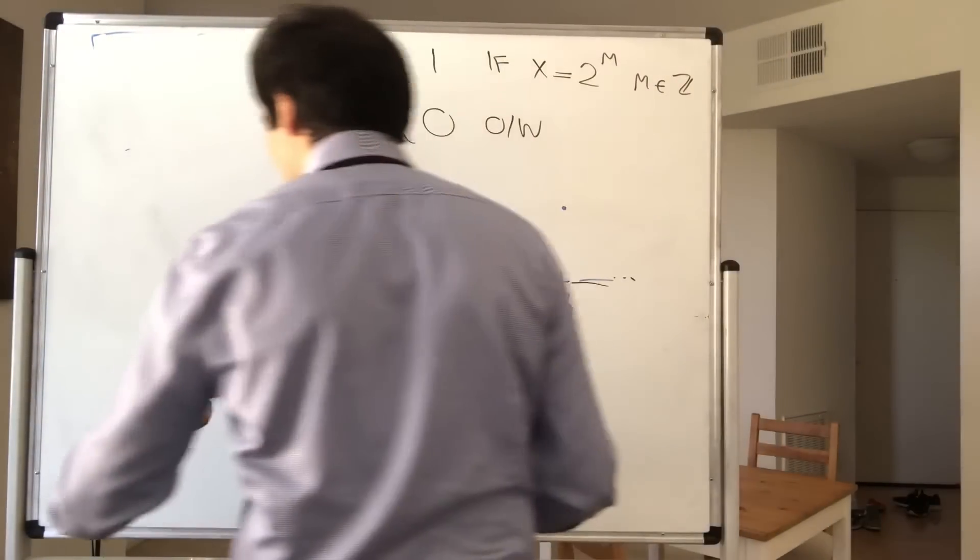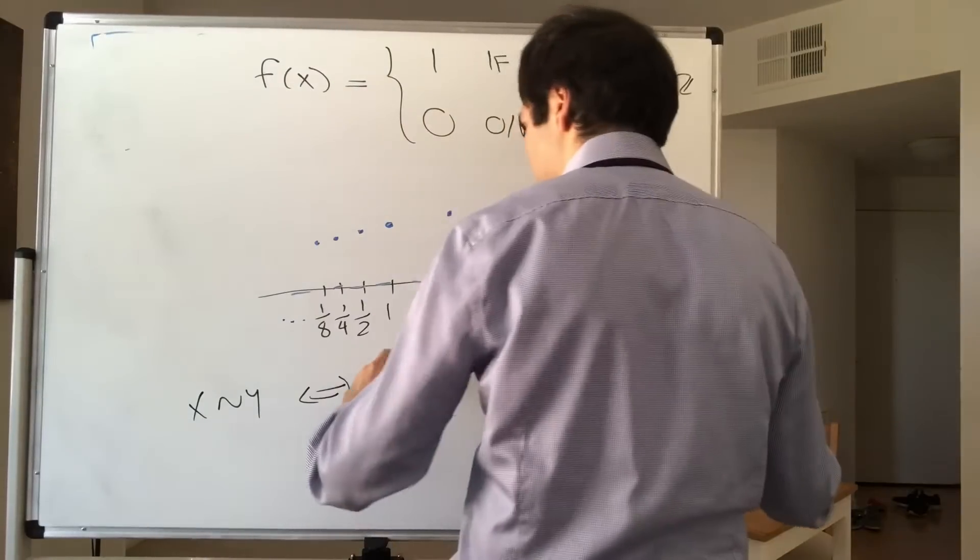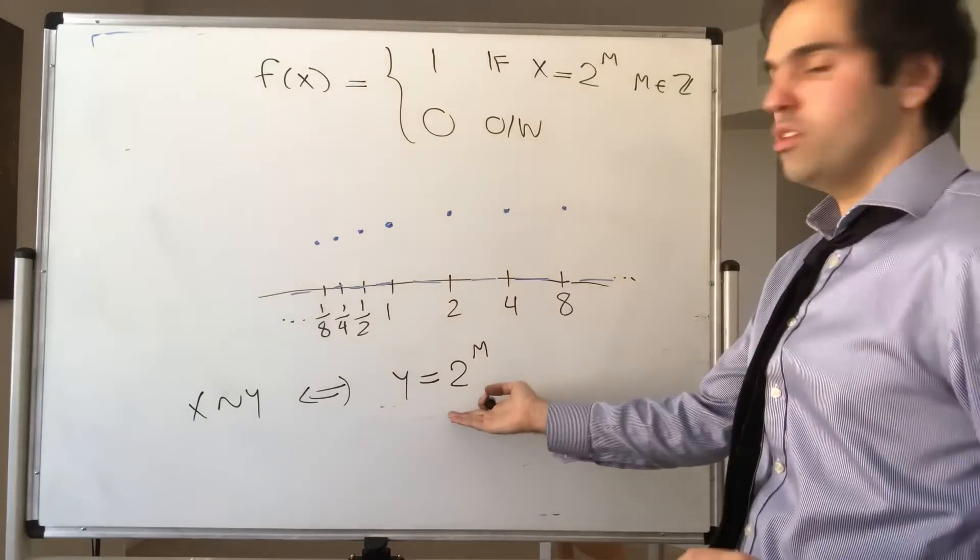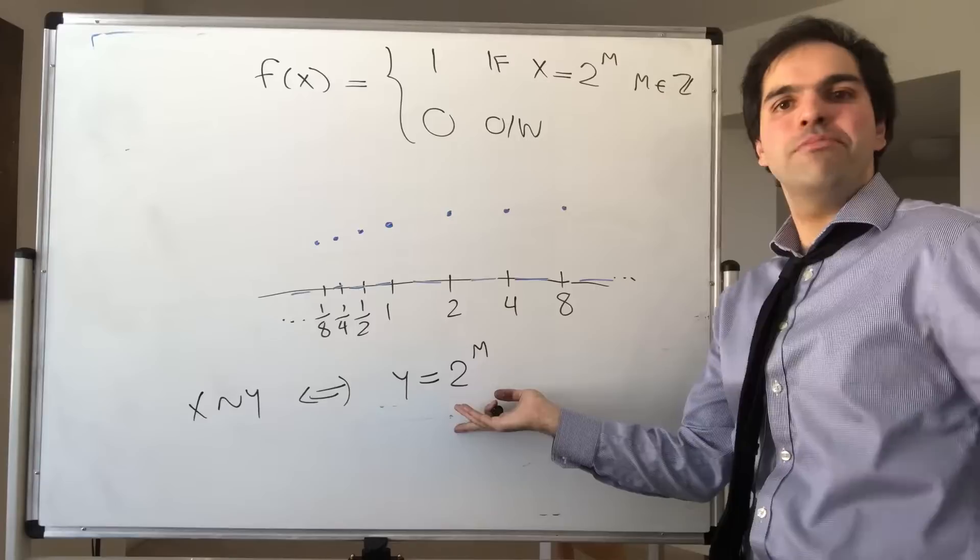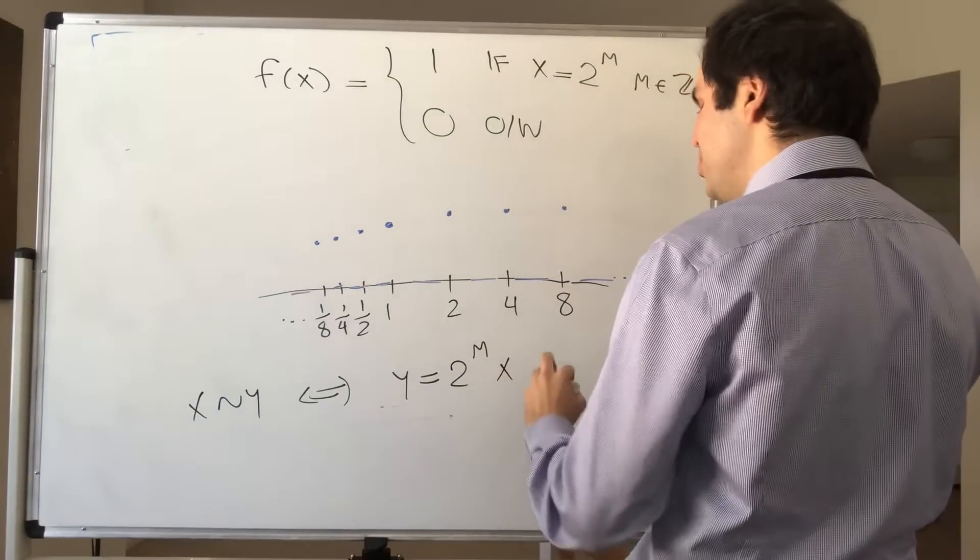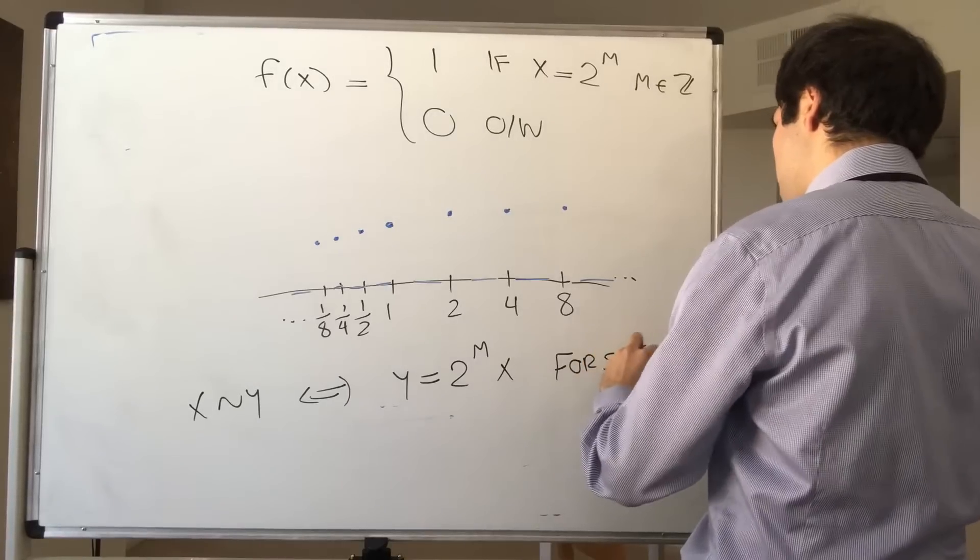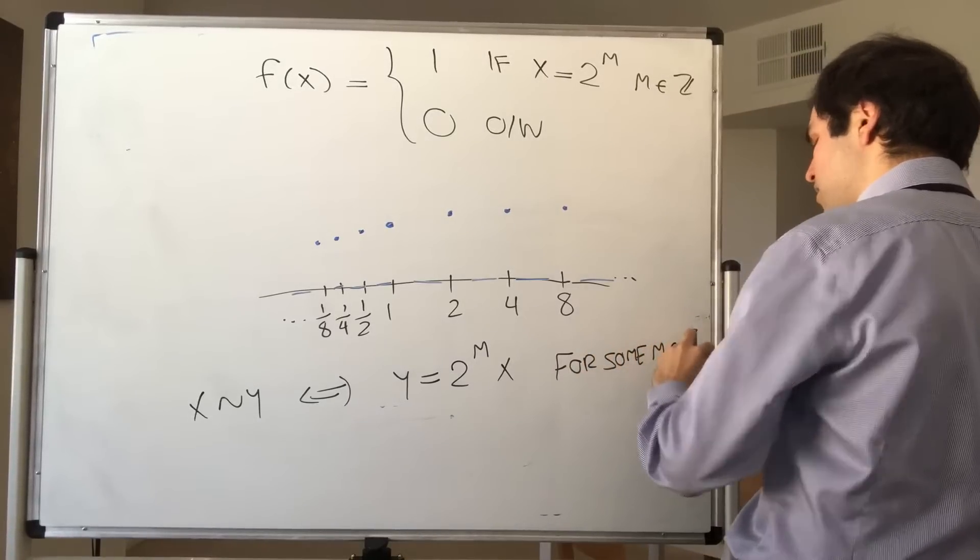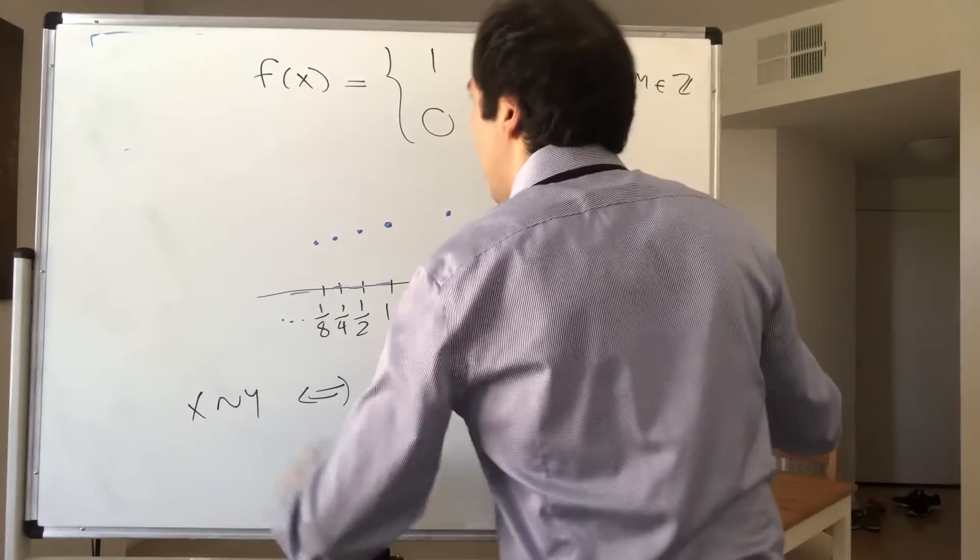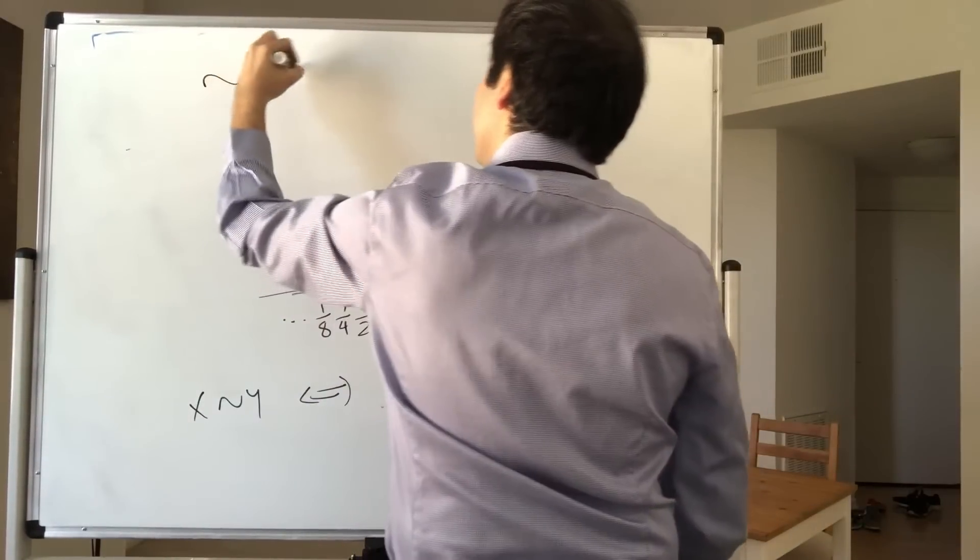So, just define x equivalent to y if and only if y equals 2 to the mx for some m in Z. And then the point is, this is an equivalence relation.